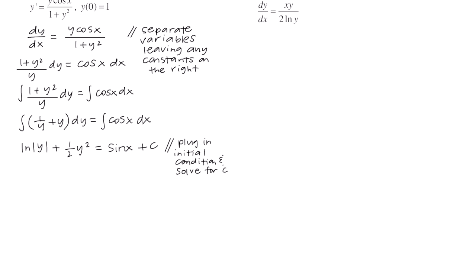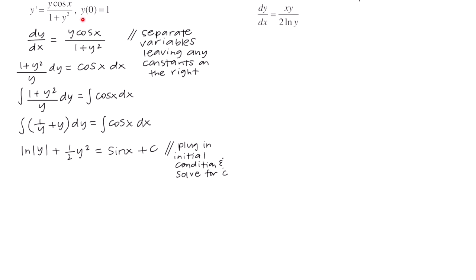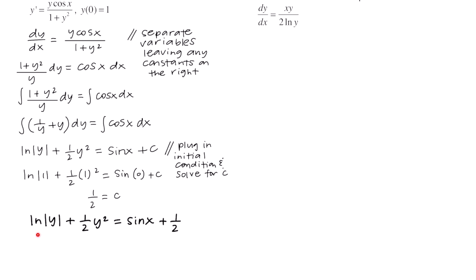Our next step is to plug in the initial condition and solve for c. The initial condition is y(0) = 1, so we plug in 1 for y and 0 for x. ln|1| = 0, and (1/2)(1²) = 1/2, and sin(0) = 0, so c = 1/2. Plugging c back in gives ln|y| + (1/2)y² = sin(x) + 1/2. Since y appears inside a natural log and squared, it's impossible to solve for y explicitly, so we leave the answer in this implicit form.